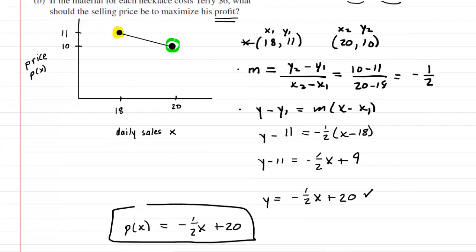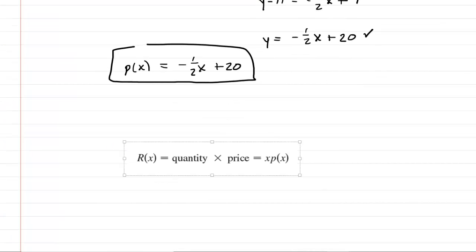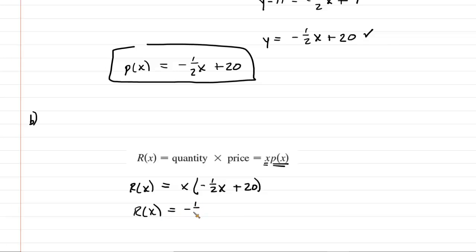Now we can see that revenue is given by this equation right here. So let's scroll down and let's begin part B's analysis by coming up with the revenue equation. So revenue R of x is equal to the quantity sold, which is simply x multiplied by our demand function. Now, of course, we came up with the demand function in part A. So we're going to plug that in. And then what we'll do is simplify. We'll distribute the x. This gives us negative 1 half x squared plus 20x. So that's our revenue function.